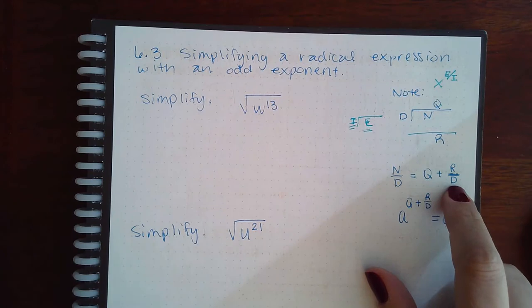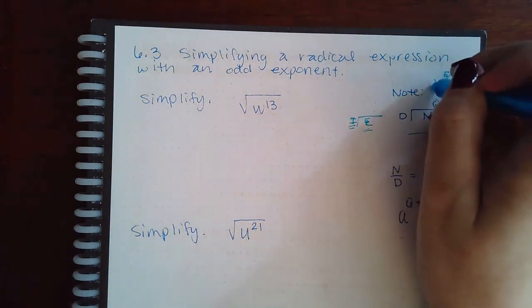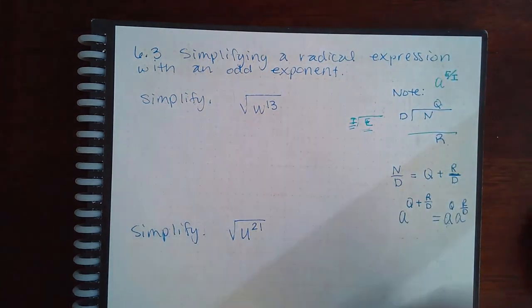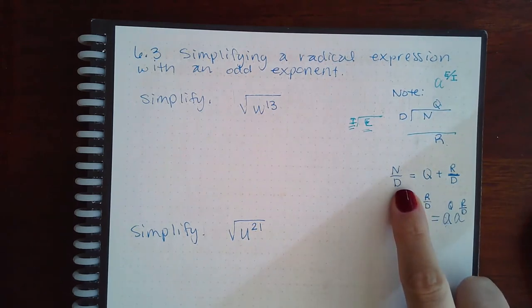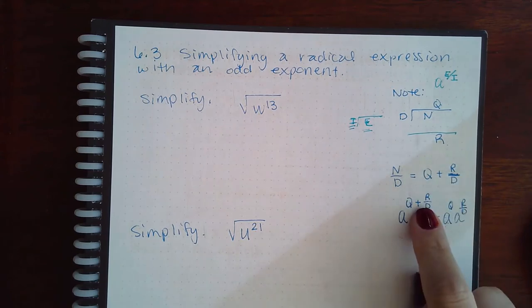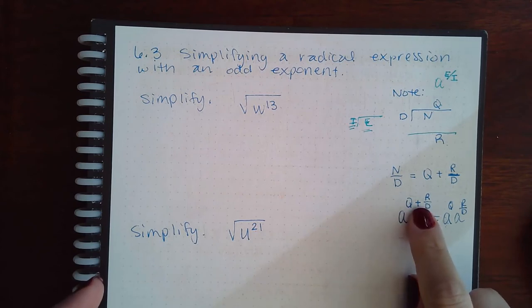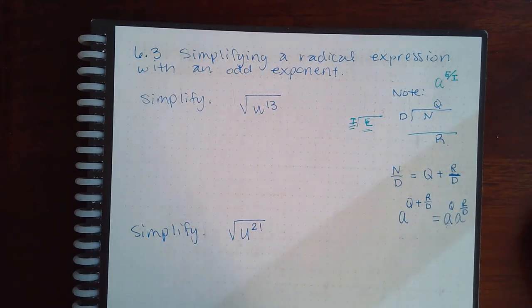You rewrite this exponent. Instead of that fraction E over I, you replace it with its quotient and remainder. Then use the product rule for variable bases. If you have a variable raised to an exponent where the exponents are added, it's because that base had two different exponents being multiplied together.